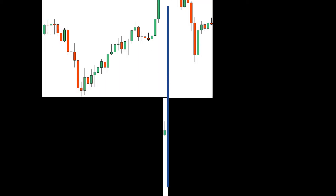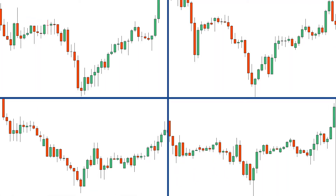Let's focus on four common candlestick reversal patterns. First up, we have the doji, which indicates indecision in the market. Next is the popular hammer — sellers initially took control, but lower prices were rejected, and the candle eventually closes near its open. For the bullish engulfing, we have a bullish candle that completely covers the bearish candle before it.